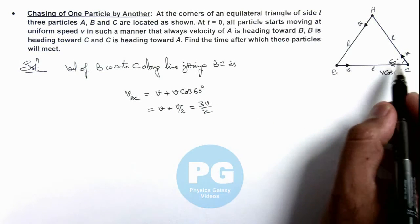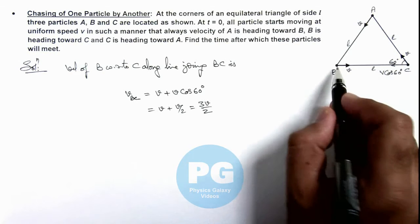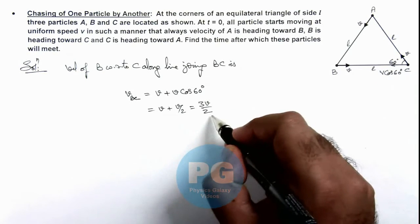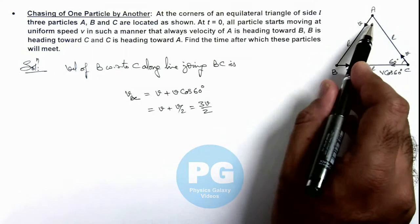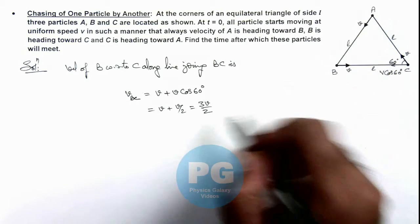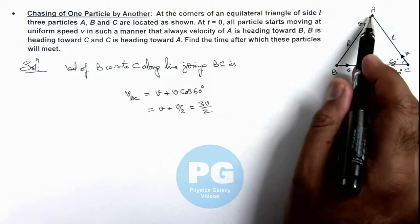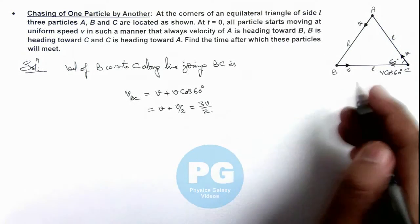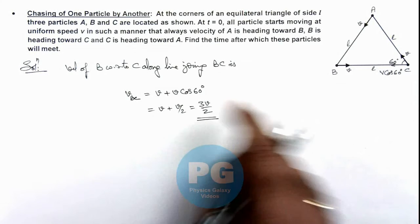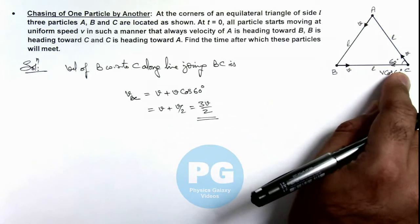So if C is considered at rest, B is moving toward C at this velocity 3v by 2. Similarly, if A is taken as rest, C will be moving toward A with velocity 3v by 2, and similarly the velocity of A with respect to B along the line joining AB will remain same. So here, 3v by 2 is the velocity of one particle with respect to another.